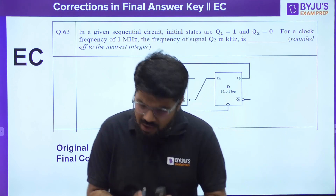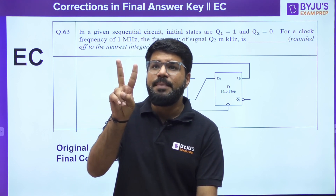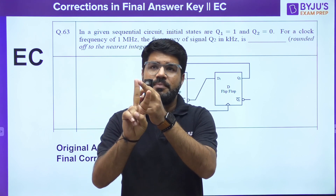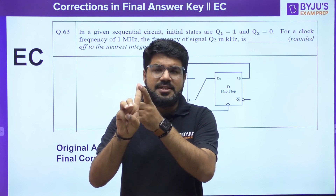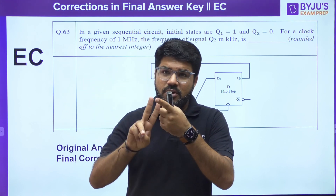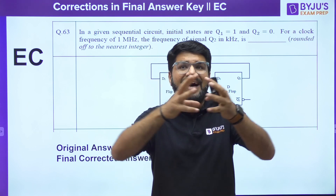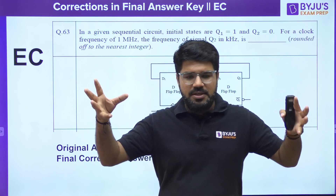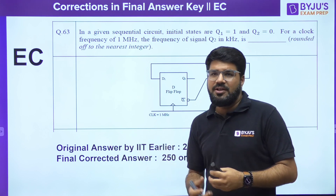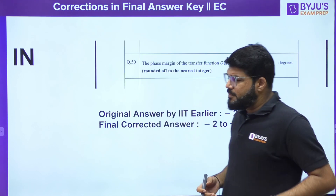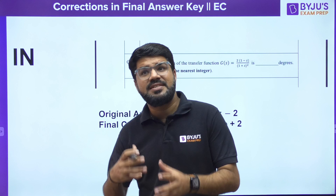To summarize the five questions from EC: two questions received Marks to All — one from Analog Circuits and one from Networks. Three had answer key corrections — one from Signal and Systems (straightforward typo), one is this Digital question regarding the bubble and complement interpretation, and one is the EDC question where the answer range was expanded to account for whether temperature effects were considered or not.